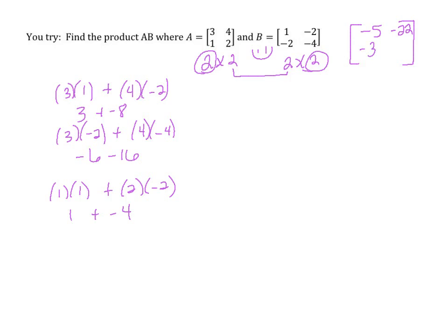And finally, the bottom right. 1 times negative 2, plus 2 times negative 4. Negative 2 plus negative 8, gives us negative 10. Now you could have done your elements in a different order, but you should still end up with the final element, or the final matrix, the same as mine.